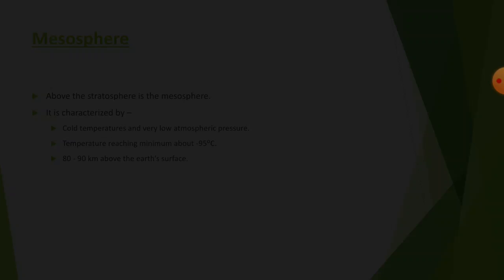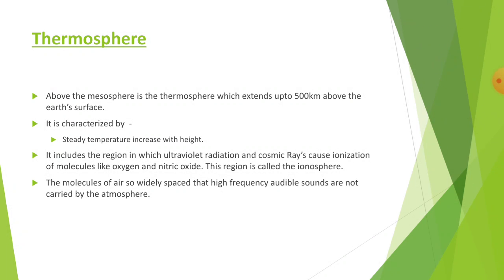Above the mesosphere is the thermosphere, which extends up to 500 kilometers above the Earth's surface and is characterized by a steady temperature increase with height from the mesopause. It includes a region in which ultraviolet radiation and cosmic rays cause ionization of molecules like oxygen and nitric oxide — this region is called the ionosphere. In the thermosphere, molecules of air are so widely spaced that high-frequency audible sounds are not carried by the atmosphere.